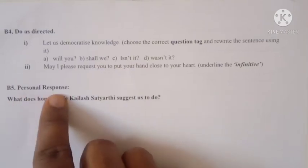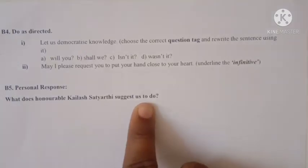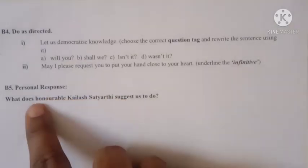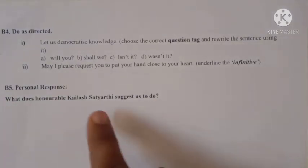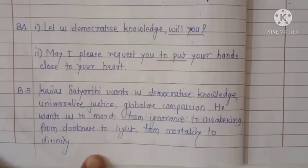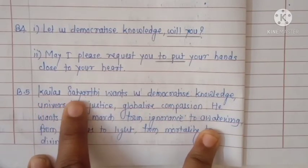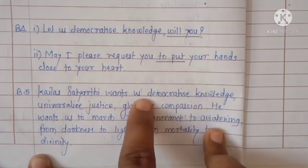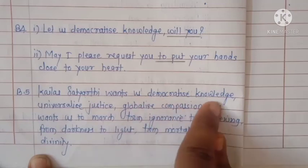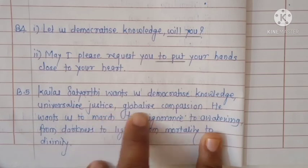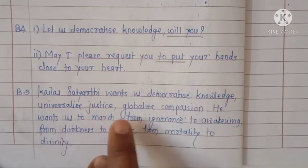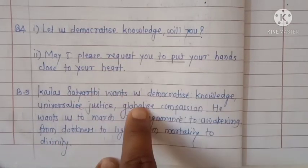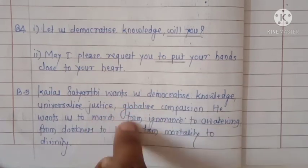Personal response activity B5: What does Honorable Kailash Satyarthi suggest us to do? Though it is a personal response, the answer comes directly from the passage. Kailash Satyarthi wants us to democratize knowledge, to universalize justice, to globalize compassion. He wants us to march from ignorance to awakening, from darkness to light, from mortality to divinity.